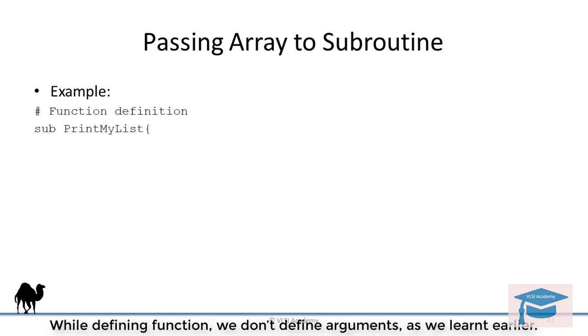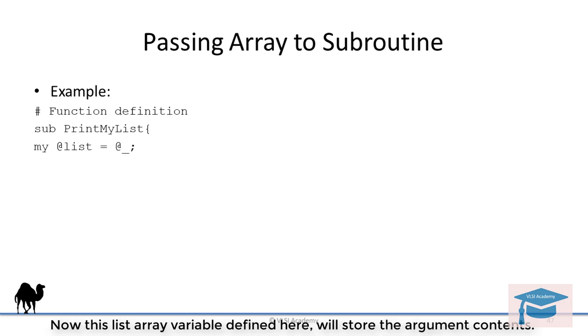While defining a function, we don't define any arguments as we learned earlier. Now this list variable defined here will store the argument contents. We learned earlier that @_ contains all arguments and we are storing it in a list variable with this statement.